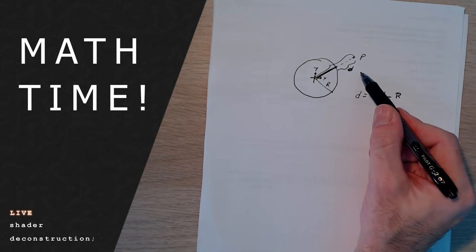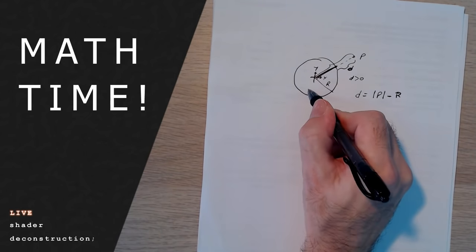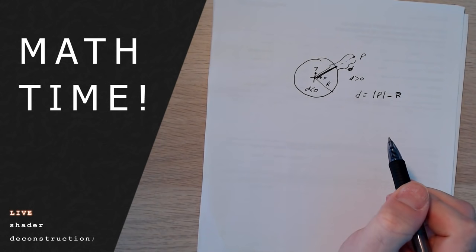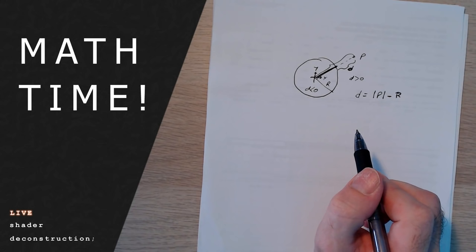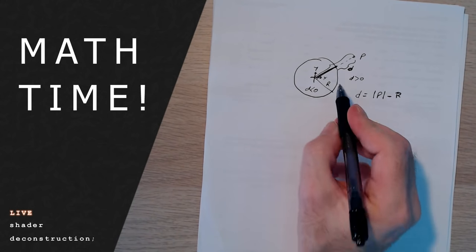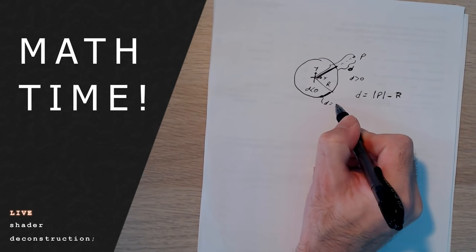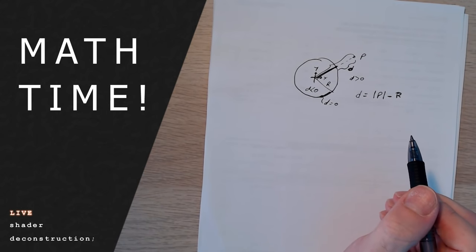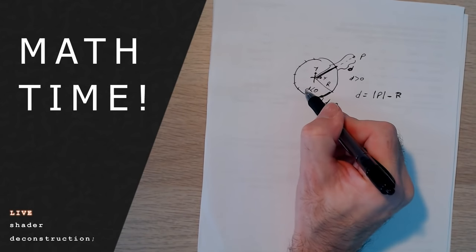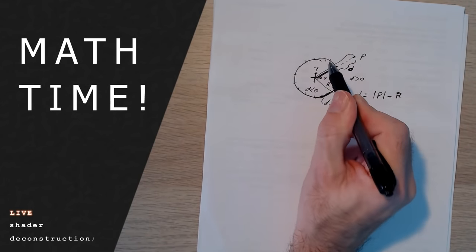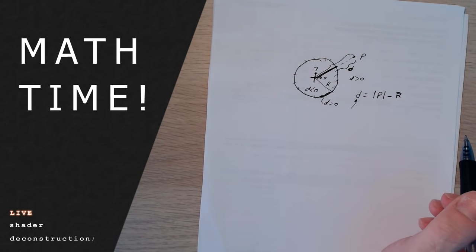Distances will be positive on the outside — D greater than zero — and negative on the inside. That's why we call them signed distance fields, because they can take both positive and negative values. They are exactly zero at the edge. The task of the raymarcher is basically to find all these points at the very edge by querying the map function multiple times, getting closer and closer to points where D equals zero.